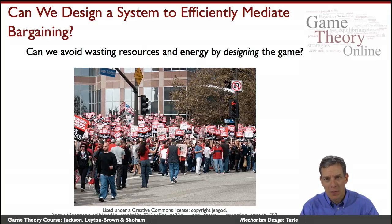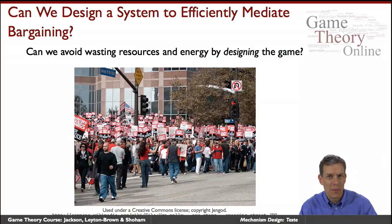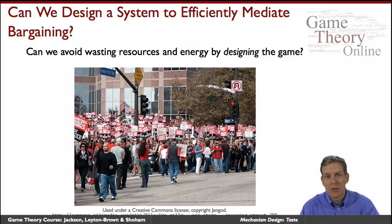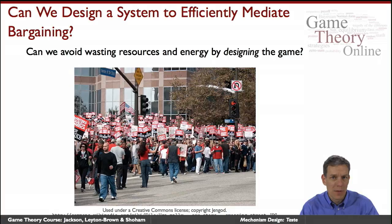How do we begin to model designing an institution and then seeing what the outcomes are going to be, and trying to design the best institution in terms of those outcomes? So we'll be looking at things like auction design, and we'll talk about why we might have breakdown and inefficiency in bargaining settings when people have private information about what they'd like to see be the outcome.